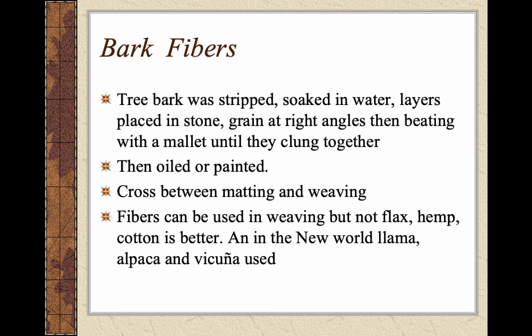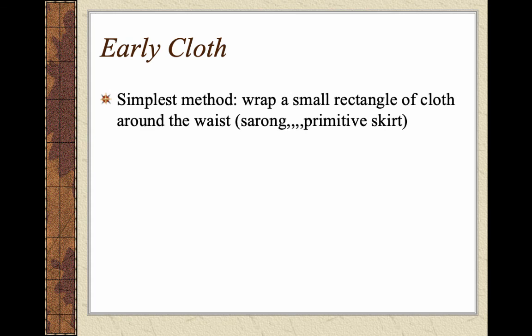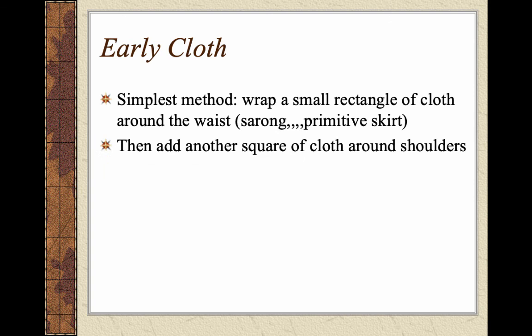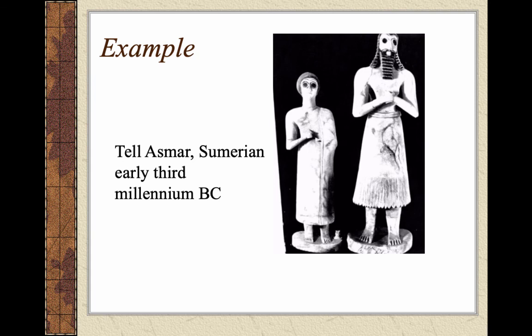Fibers can be used in weaving, but flax, hemp, and cotton are better. In the New World, llama, alpaca, and vicuña were used. Depending on geographic location, they used what they had access to — whatever was at their disposal in their environment, which makes sense until trading started increasing. The simplest method of early cloth is a small rectangle around the waist, like a sarong, with a square cloth added around the shoulders. This method was used a lot by Egyptians, Assyrians, Greeks, and Romans, and did require weaving to create the cloth.